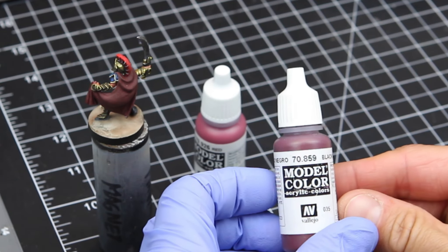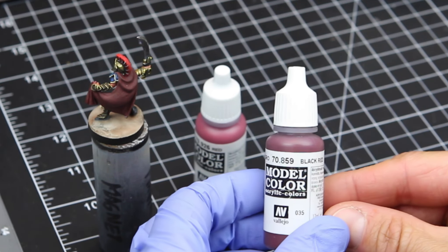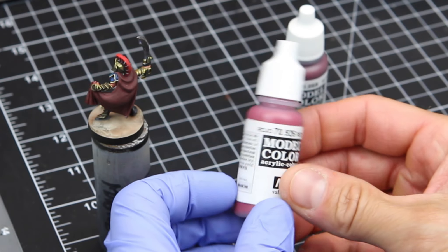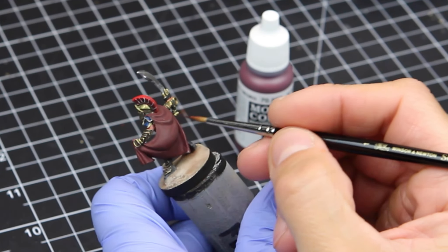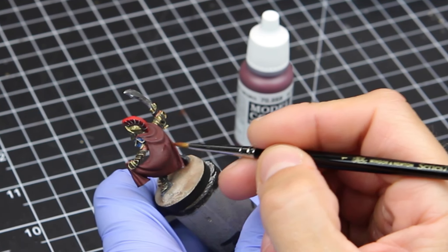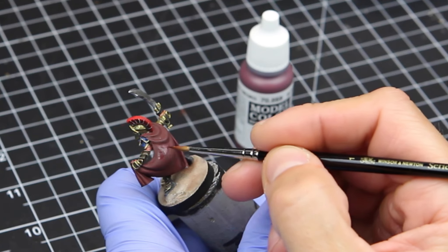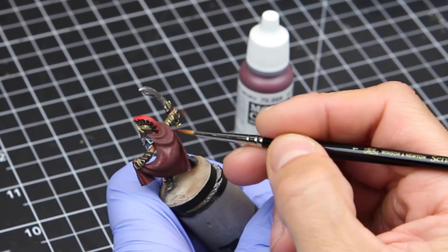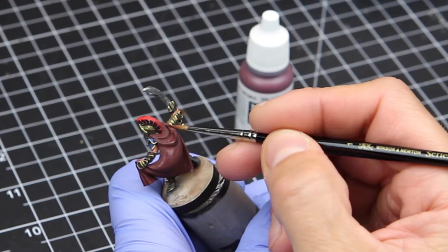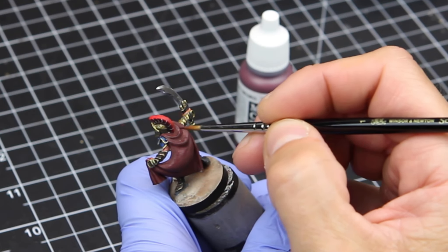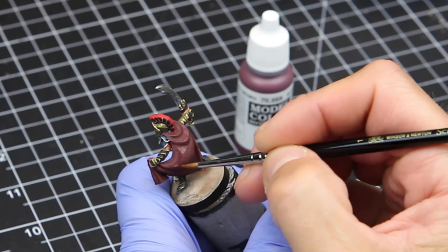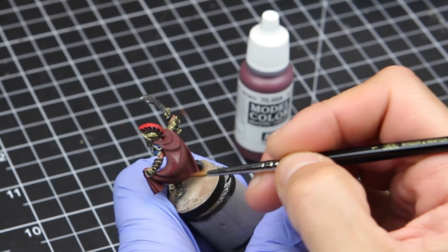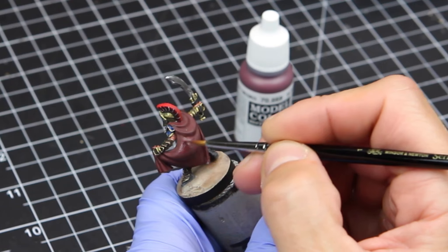So the base coat, I used this Vallejo black red paint and for the glaze, we're going to use a straight up red. Now it's going to look like I'm pretty much just brushing water onto the model. Again, it's a very thin paint here, thin down paint. And it's probably going to take me close to 10 plus layers here before the highlights start to show, the blend starts to show.